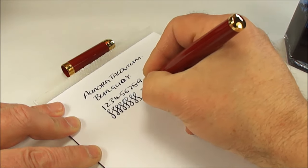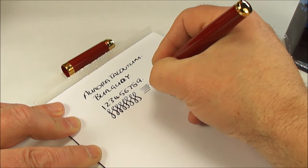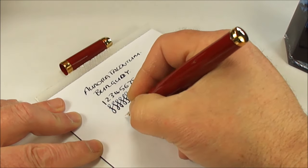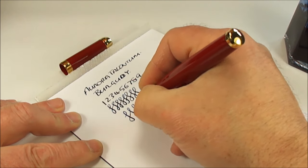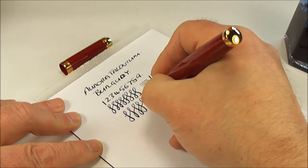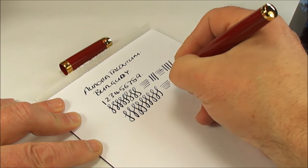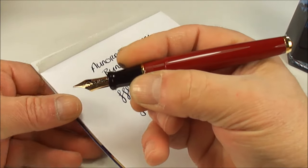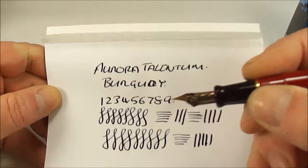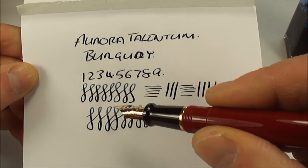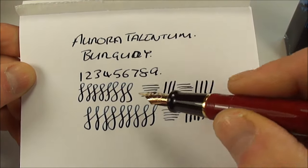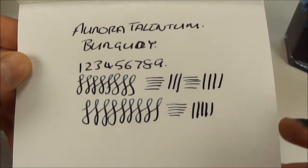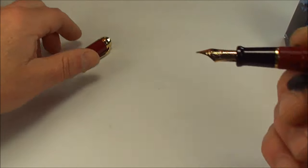As we said it's got a stub nib which means on the cross stroke there you can see we're getting a fine line, and on the downward stroke we can get a slight broader line. And there we have it, very smooth, very nice writer. There's the writing sample, as you can see some a little bit of variation which is nice. But a lovely lovely nib to write with.